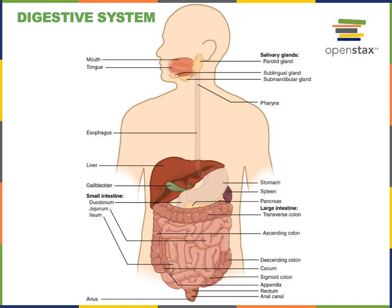The chyme that exits the stomach and enters into the duodenum mixes with secretions from the liver, the pancreas, and the gallbladder. The pancreatic secretions contain digestive enzymes important for chemical digestion, and also include bicarbonate, which is a base that functions to neutralize the acidity of the gastric juice coming from the stomach. The liver secretes bile, which is important for helping to emulsify lipids — making lipids suspended in an aqueous solution where the digestive enzymes are present — in order to facilitate the chemical digestion and absorption of lipid-soluble nutrients.